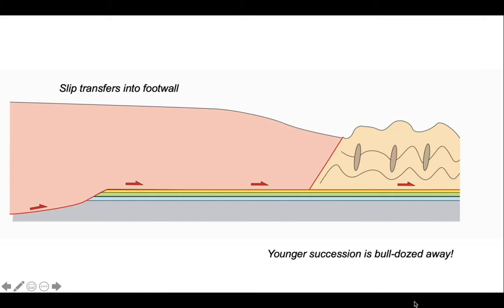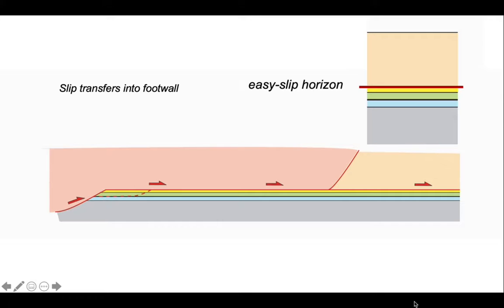So we'll have an easy slip horizon at the base of the beige at the top of the yellow horizon. And consequently, the thrust transfers displacements onto this and essentially bulldozes the younger units away, leaving a panel of rocks buried beneath the thrust sheet. So that was that easy slip horizon.